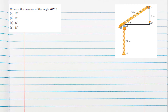Question 3 asks for the measure of angle BRS. We already found theta as 30°, and RS is vertical so that angle is 90°. By the angle sum property of the triangle, the remaining angle BRS must be 60°. So option A is the correct answer — it is a 30-60-90 right triangle.